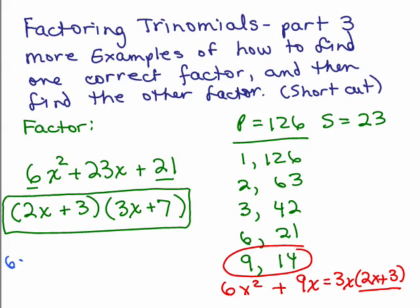If I do 2x times 3x is 6x squared, the outer term is 14x, the inner term is 9x, and the last term is 21, and so it checks. So that's the correct factorization, 2x plus 3 times 3x plus 7.